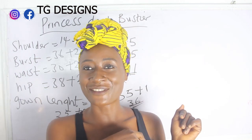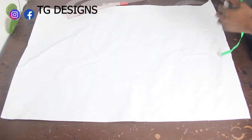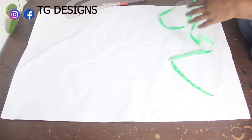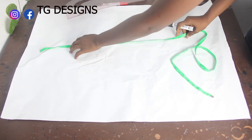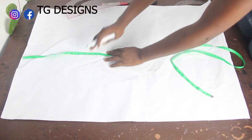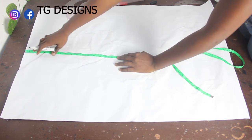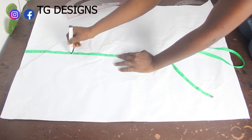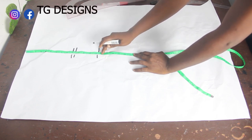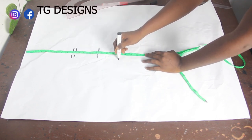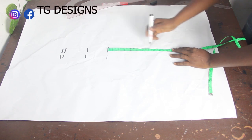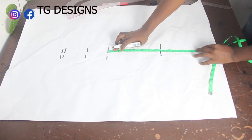Let's go ahead now to the cutting part. We want to draft the pattern for our princess dart bustier. I'm going to mark my basic measurements: shoulder to arm 9 inches, shoulder to bust 9.5 inches, shoulder to underbust 13.5 inches, shoulder to waist 17 inches, waist to hip 9 inches, and waist to knee length 17 inches.